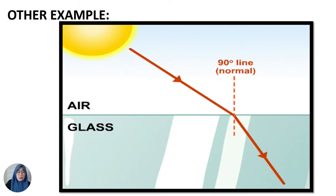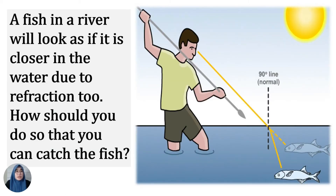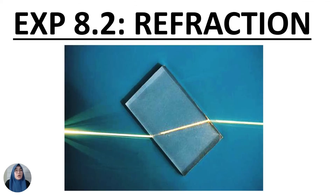Another example with two different media — air and glass. A fish in a river will look as if it is closer in the water due to refraction. To catch the fish, you must change your focus — not follow what your eye sees — by using the concept of refraction of light. We also have experiment 8.2 on refraction. When light travels from one medium to another along or parallel to the normal, it travels straight without bending or refracting, although there is a change in speed.